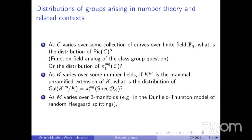In another analogy between number fields, function fields over finite fields, and three-manifolds, we can consider: as M varies over three-manifolds — for example, Dunfield and Thurston gave a model of a random Heegaard splitting which gives a random three-manifold — what is the distribution of its fundamental group? This can be a non-abelian, certainly potentially infinite, group, and we can ask what distributions of fundamental groups arise as we vary over three-manifolds.